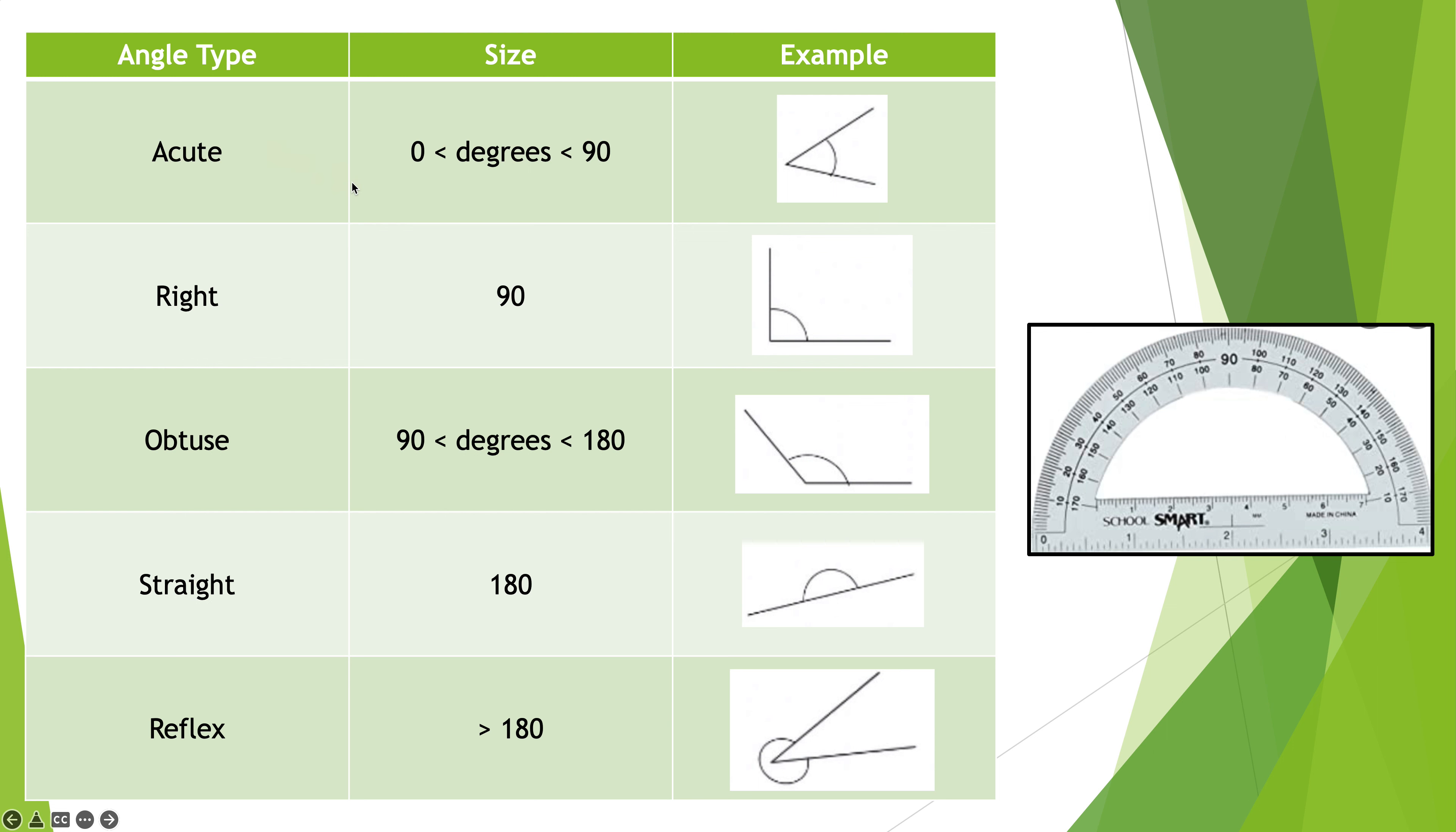They're built—an angle is built by combining two rays. Now there are several types of angles and they're all based on the measurement of the angle. Those measurements are based on a thing we call a protractor.